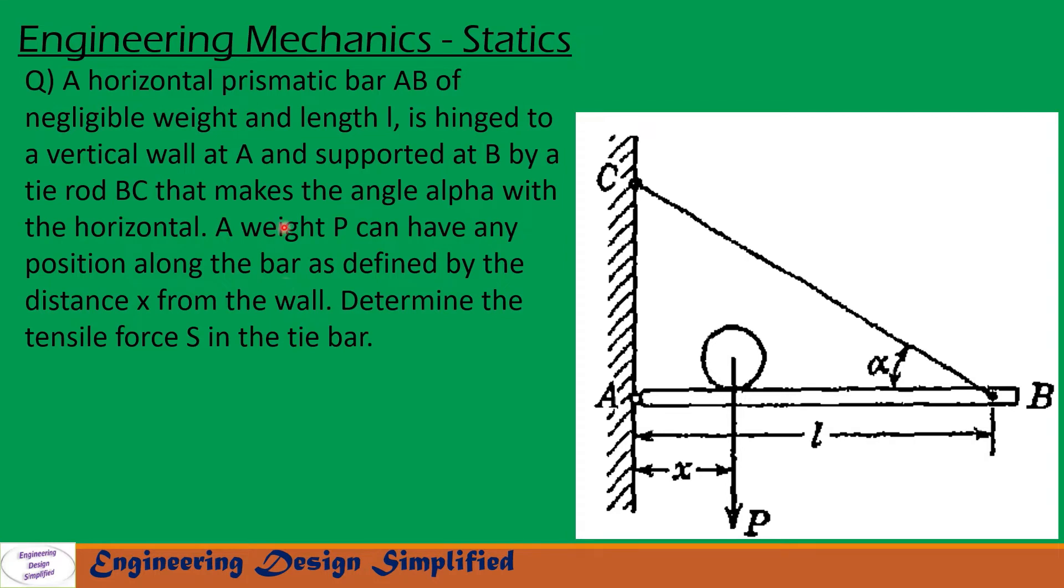Today's problem is a horizontal prismatic bar AB of negligible weight and length L is hinged to a vertical wall at A and supported at B by a tie rod BC that makes the angle alpha with the horizontal.